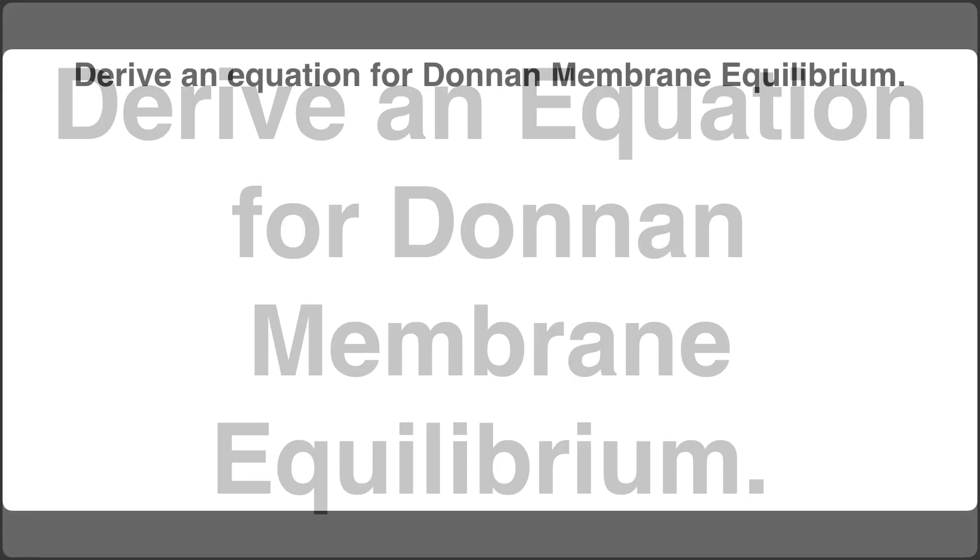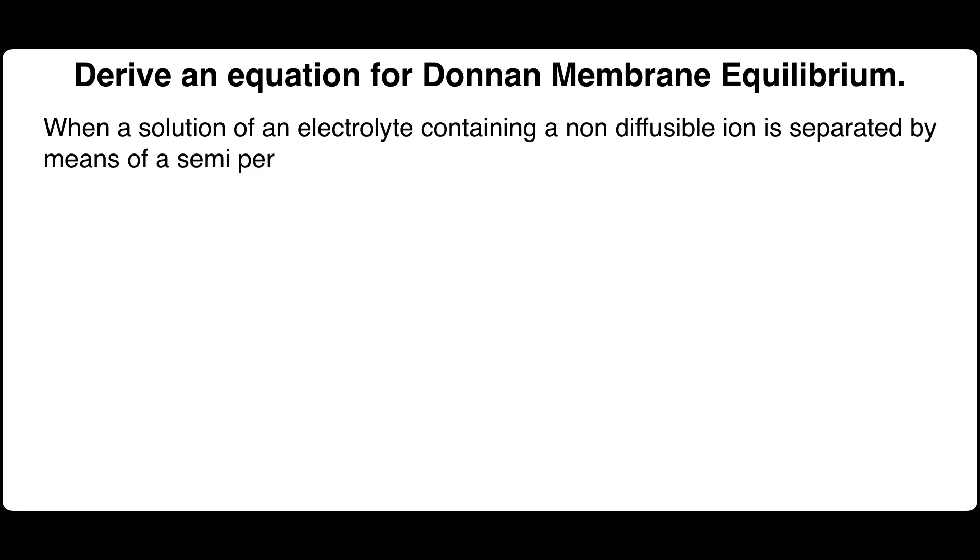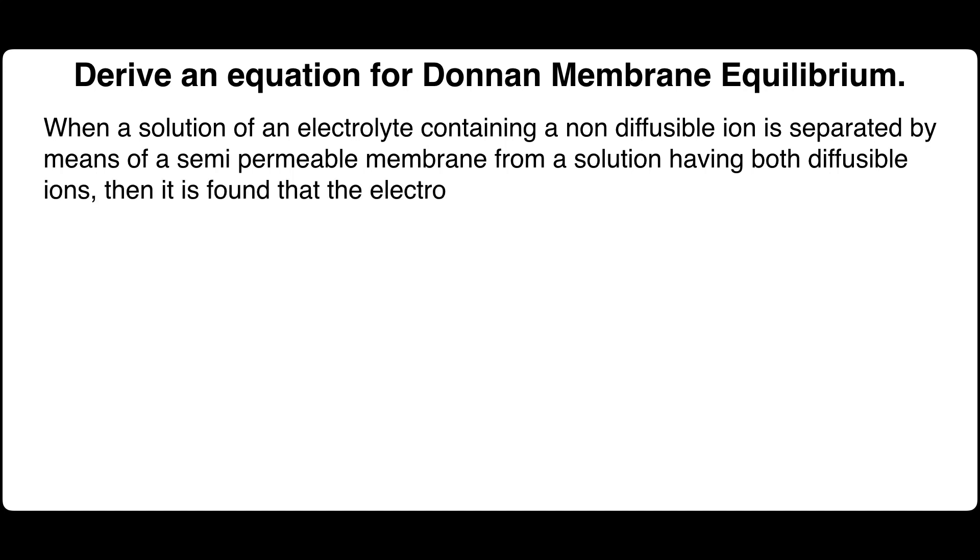Derive an equation for Donnan membrane equilibrium. When a solution of an electrolyte containing a non-diffusible ion is separated by means of a semi-permeable membrane from a solution having both diffusible ions and non-diffusible ion, then it is found that the electrolytes get unequally distributed.